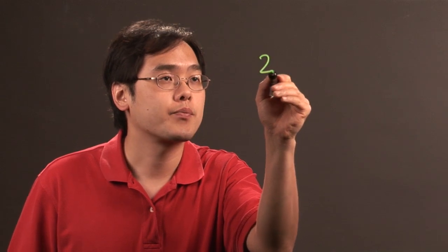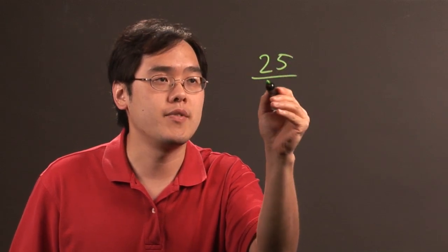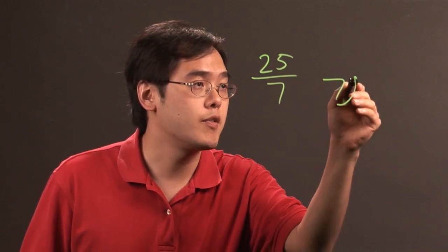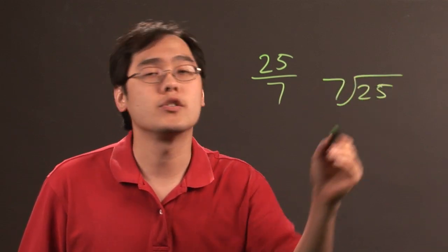Now suppose you wanted to find out, you want to take 25 and you want to divide that by 7 and you want to use long division method. What you're doing is you're setting it up as a long division problem, 7 going into 25.